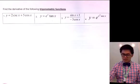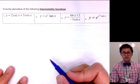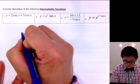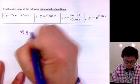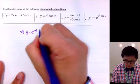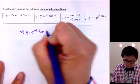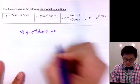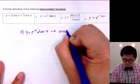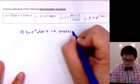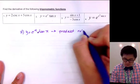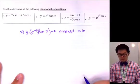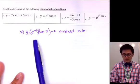Now let's find the derivative of the second function. Problem number two is y equals e to the x times tangent x. In this function, we know that we're going to be using the product rule because we have two separate functions.